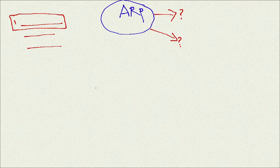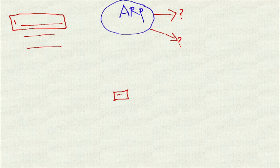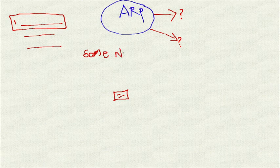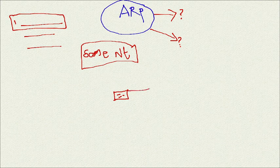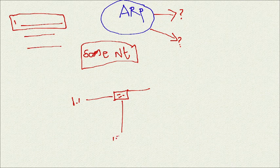Now we are going to move to the topic. What is ARP? We are going to cover it theoretically first, and after that we will see it practically. So now, same network ARP: here is a switch connecting with three PCs. These three PCs have IP addresses 1.1, 1.2, and 1.3.